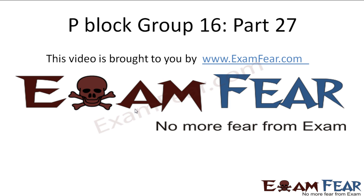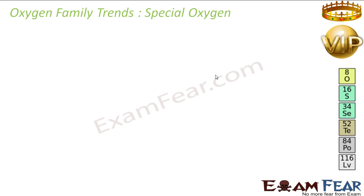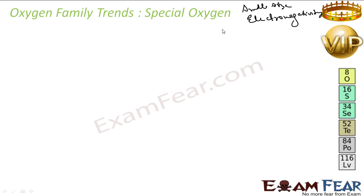This video on P-block elements part 27 is brought to you by examfier.com. Let's talk about oxygen — oxygen is special. Oxygen has very small size; if you compare oxygen and sulfur, there is almost a 60% increase in size. Oxygen also has very high electronegativity.